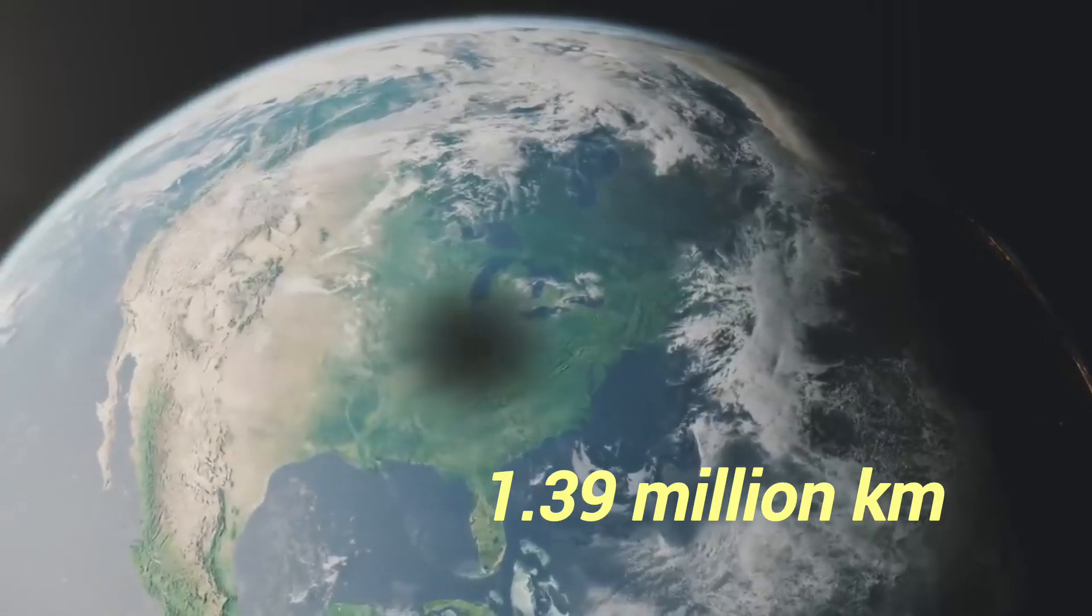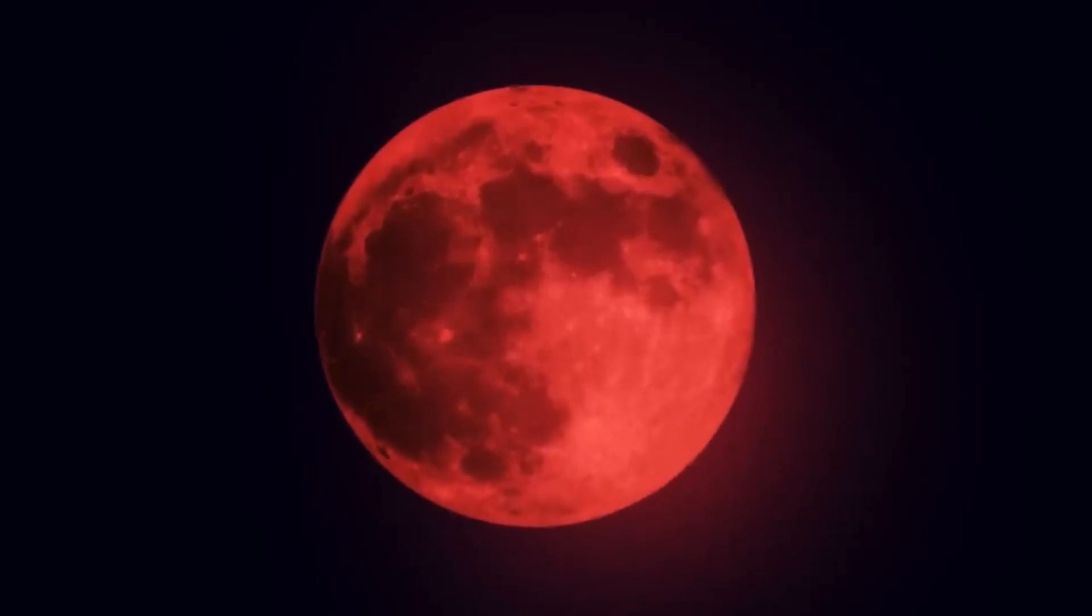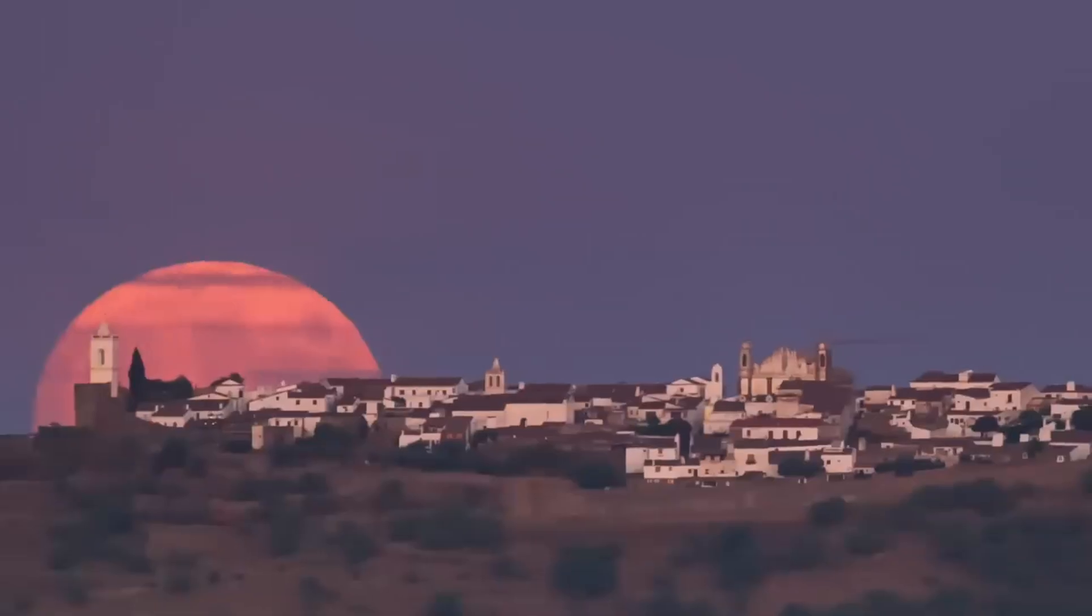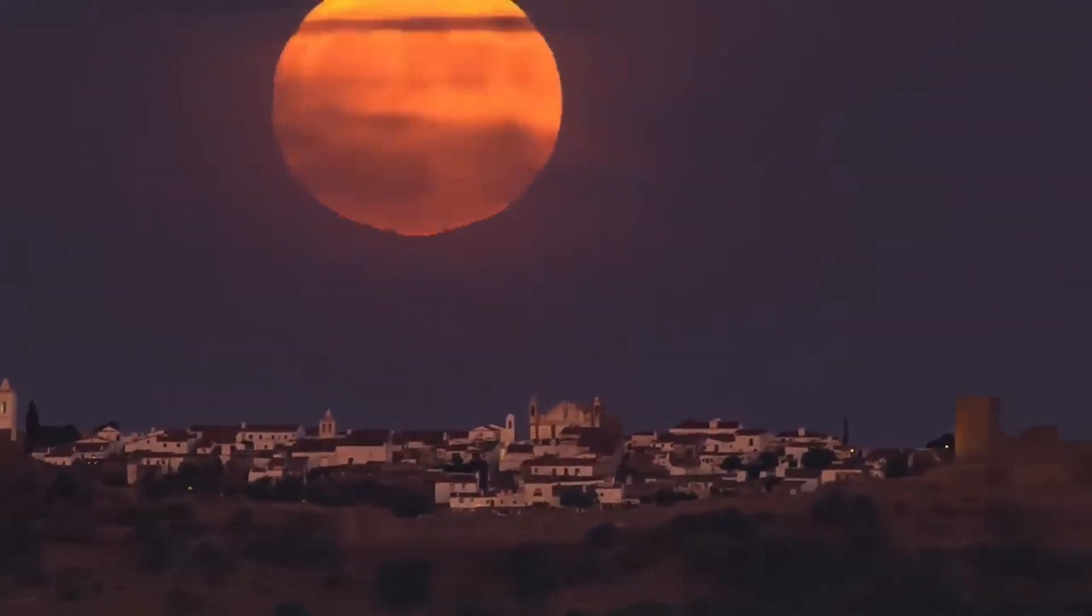The sun is about 1.39 million kilometers in diameter, while the moon is only about 3,474 kilometers wide. That means the sun is roughly 400 times bigger than the moon.